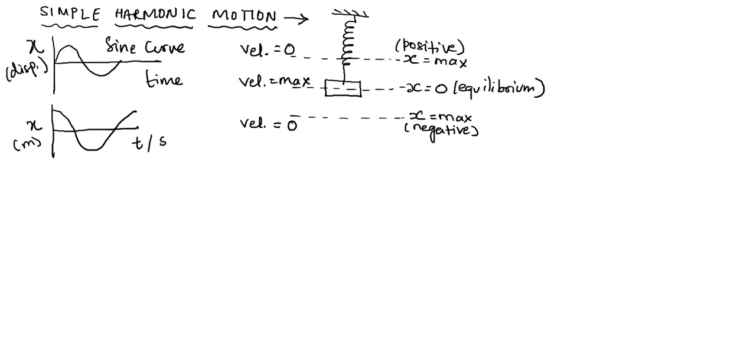Now if velocity is zero, how come the spring, how come this object again comes back? That is because you have your force which is maximum, which also means that your A, the acceleration, that is also maximum. So acceleration is maximum here. Here your force is zero, the acceleration is zero. And then here again the acceleration is maximum.